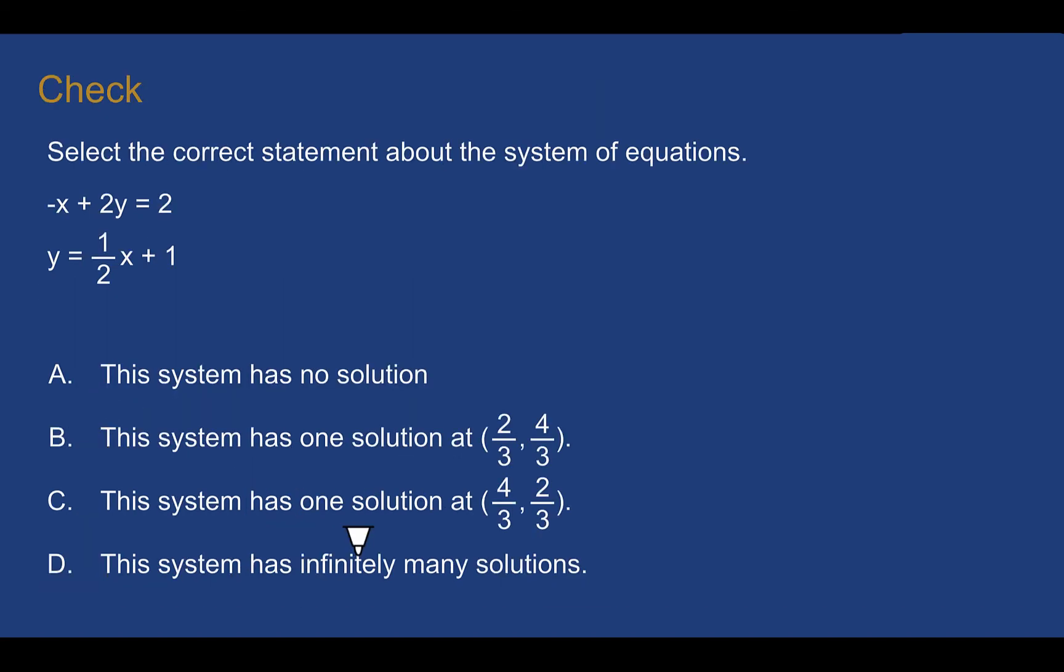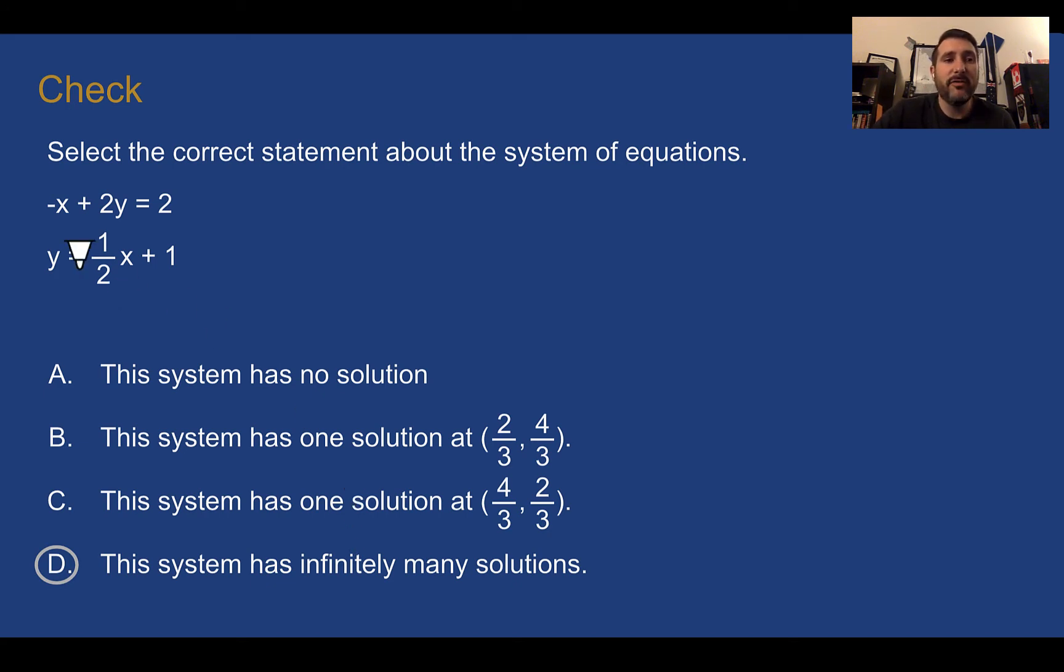Check your understanding. Choose the correct statement about this system of equations. Pause the video now and complete the check. Check your answer. You should have said D. This has infinitely many solutions. If we were to plug in, we see y is solved. So negative x plus 2 times 1 half x plus 1 equals 2. I just took that and plugged it in for y. Then distributing out, I would end up with 2 times 1 half is 1x. It's positive. 2 times 1 is 2. I end up with negative 1x plus 1x. Negative 1 plus 1 is 0, so I end up with no x's and 2 equals 2. Here's my true statement. It's my identity, so this would have infinite solutions.